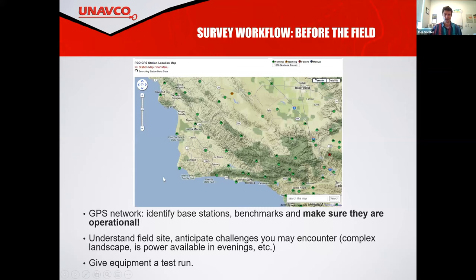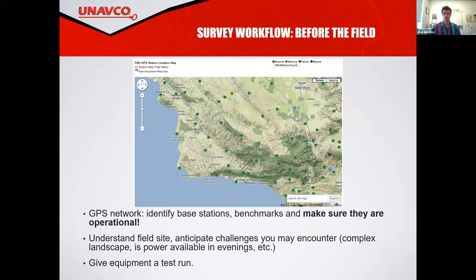When you do a GPS survey, you need to consider whether you have CORS stations around you. In our case, we have experience surveying in Grand Junction, so we know we have the VRS or VRN system and we're going to be in good shape to use that. But if you're doing a survey in a rural area, you need to make sure that your ability to survey your ground control points is going to work.